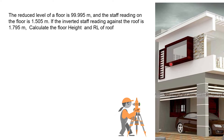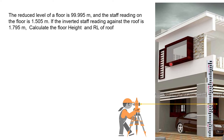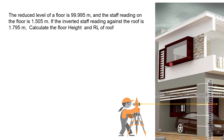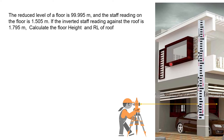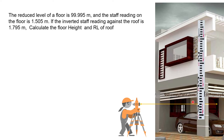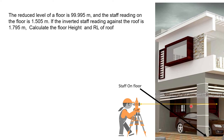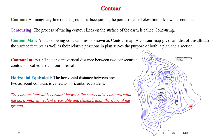Suppose we have set up a tripod at one side of the building. When we hold the staff on the floor, the staff reading is 1.505. In the second case, we are holding the staff in an inverted direction — you can see here the readings are increasing in the downward direction — and that reading is 1.795. So staff on floor gives 1.505 and inverted staff on roof gives 1.795.